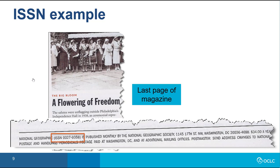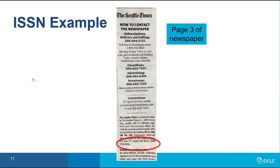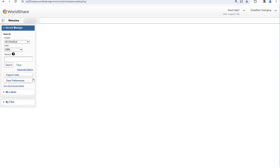The ISSN is often found in the masthead area of the publication, which tells you who the publisher is, how much it costs to subscribe, where to send change of address notices, and so on. This example from National Geographic is on the last page of the magazine. This example is on page three of the magazine, which may be a more common placement of the masthead. This example from a newspaper is on page three — some papers place this information on the editorial or opinion page. To search an ISSN, change the index to ISSN and then type the ISSN including the hyphen.